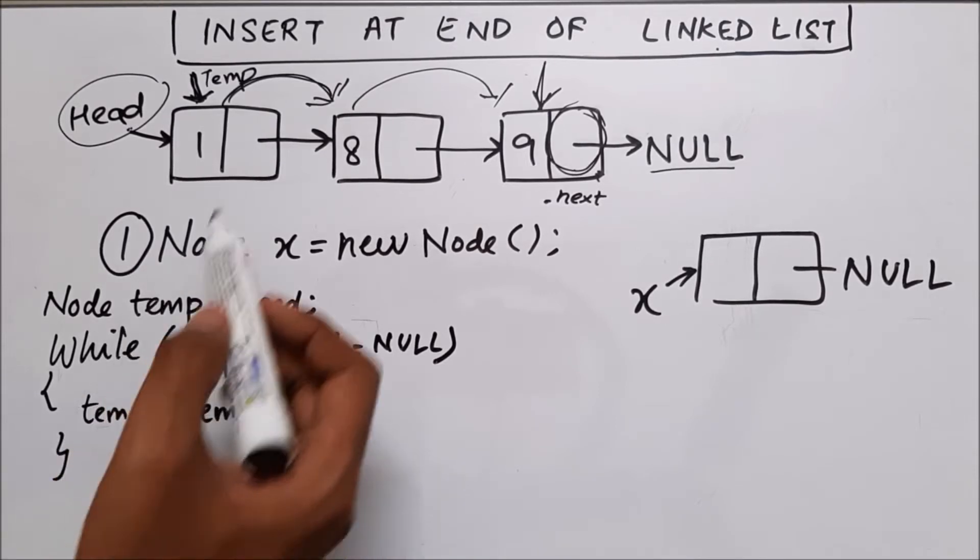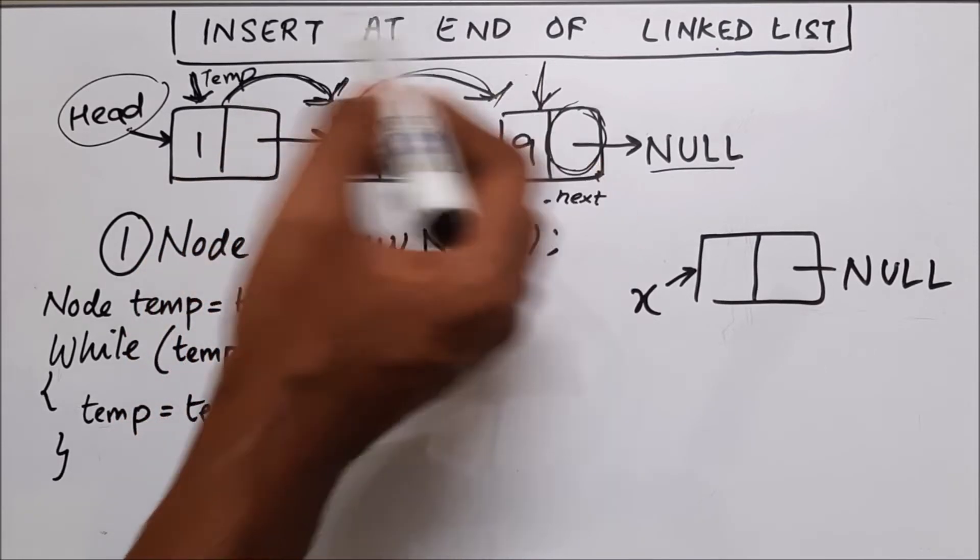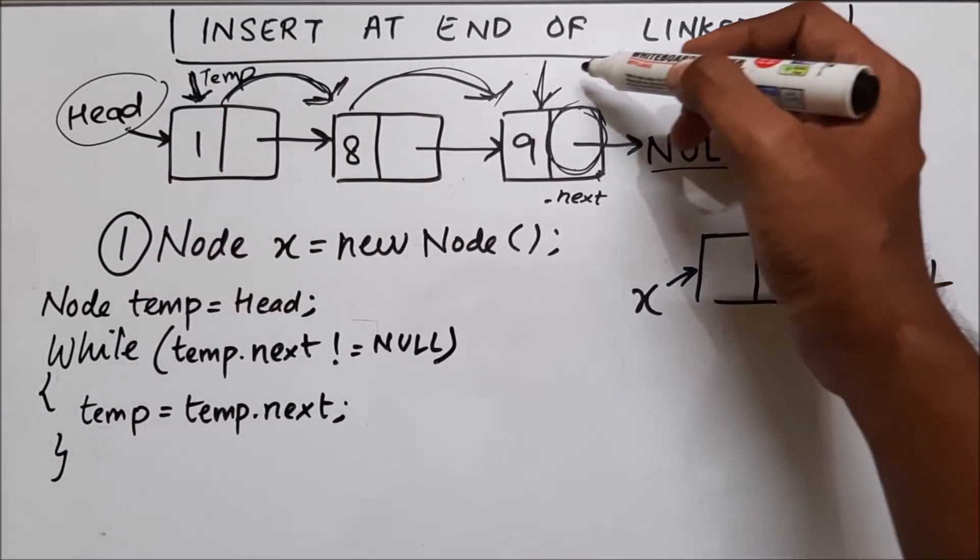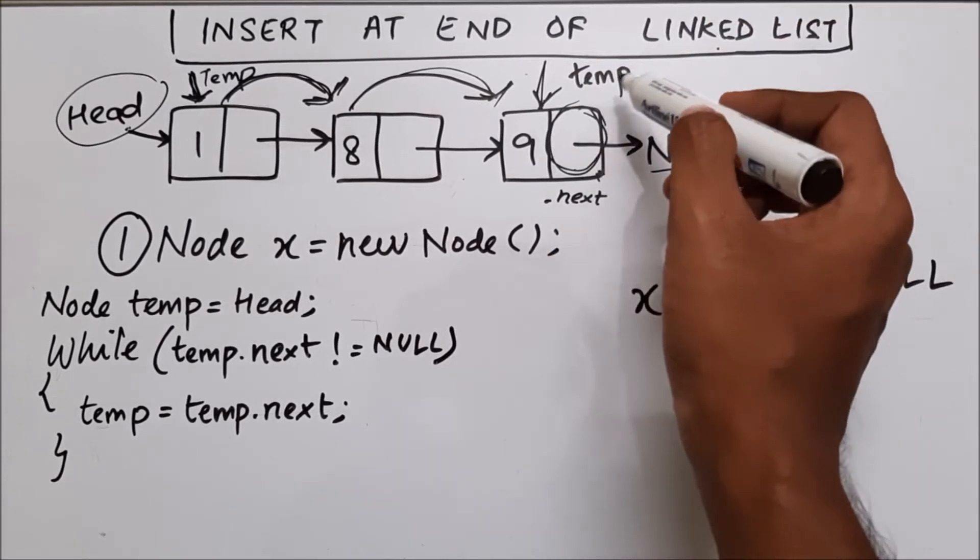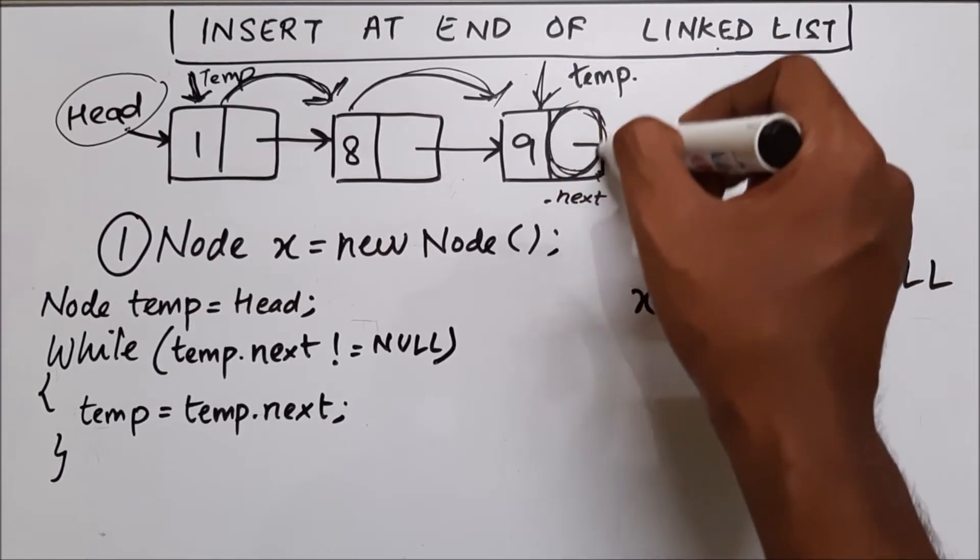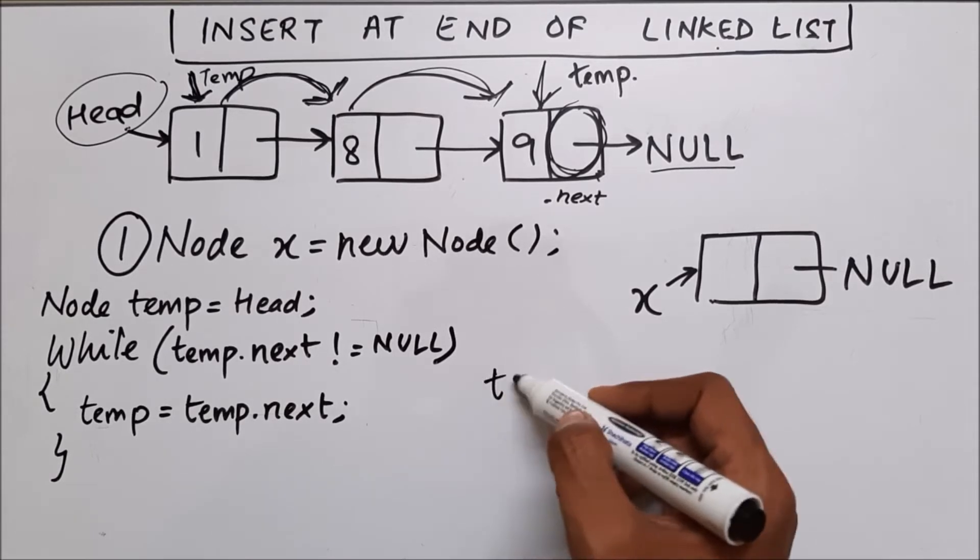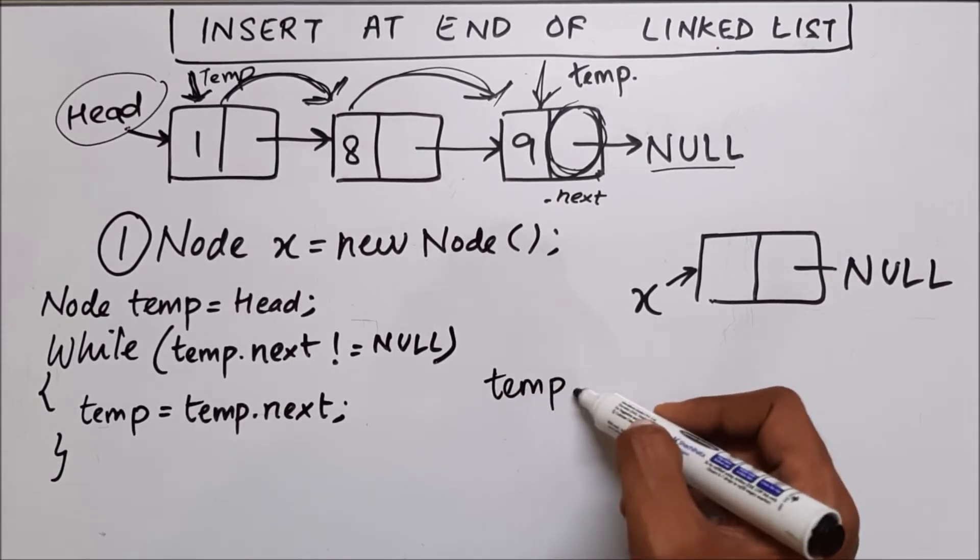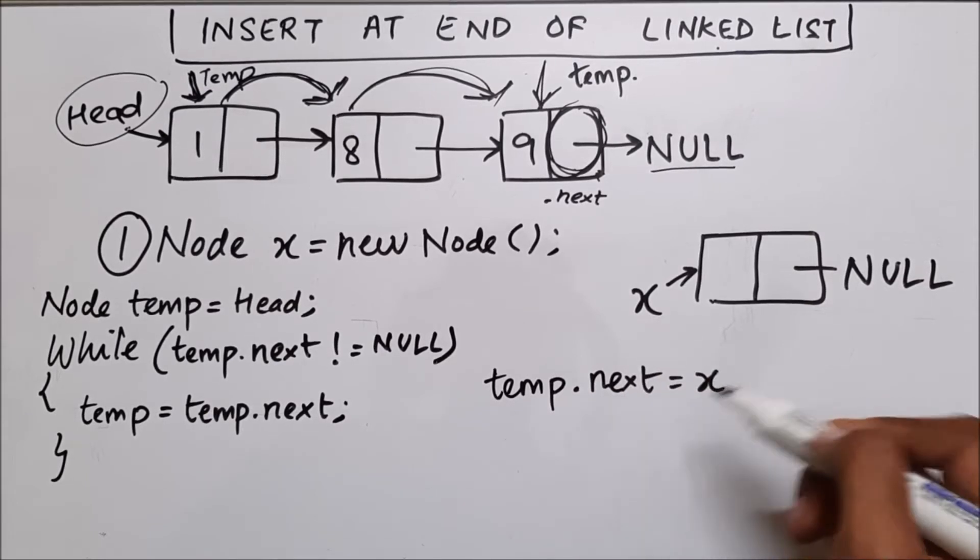So using this while loop, we are making temp to move one node at a time and reach the last node. Once temp has reached over here, now what we have to do? We have to put this address in this part. So after this, I will say temp dot next equal to x.